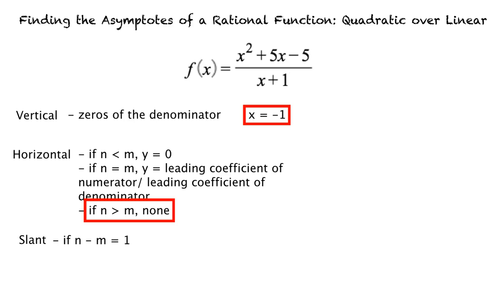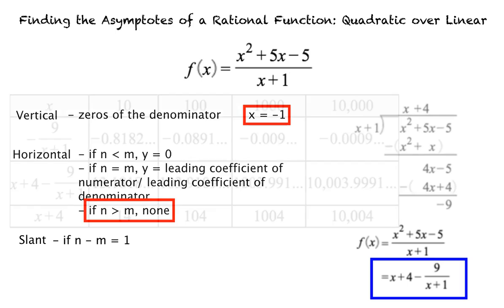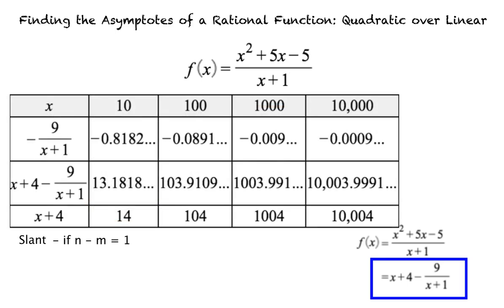Our function has a numerator with degree 2 and a denominator with a degree of 1. Therefore, it has a slant asymptote. We can find this asymptote by performing long division. We will divide x squared plus 5x minus 5 by x plus 1. This gives us x plus 4 minus 9 over x plus 1. Note that as x increases or decreases without bound, negative 9 over x plus 1 approaches 0. As negative 9 over x plus 1 approaches 0, we have that x plus 4 minus 9 over x plus 1 approaches x plus 4.